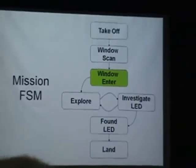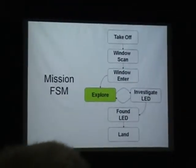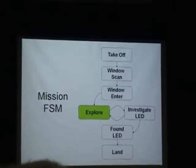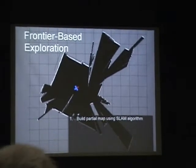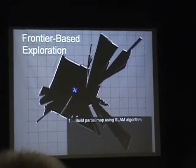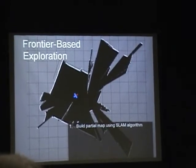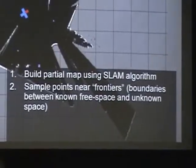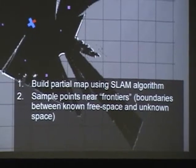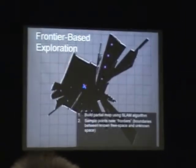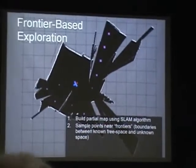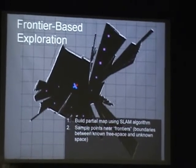Once inside, we transition to the explore state where we start with the partial map built using the SLAM algorithm. We sample points near frontiers, which are the boundaries between explored space and unexplored space that's not blocked by occupied space, such as walls.